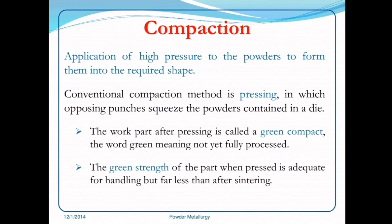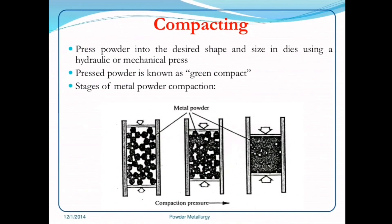Compaction is the application of high pressure to the powders to form them into the required shape. The conventional compaction method is pressing using a hydraulic press, in which opposing punches squeeze the powder contained in a die. The work part after pressing is called the green compact — the word 'green' means not fully processed. The green strength of the part when pressed is adequate for handling but far less than after sintering. The stages of metal powder compaction are shown in the diagram.